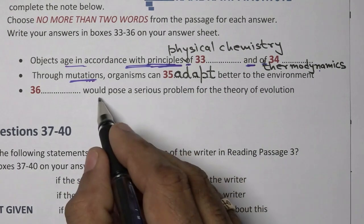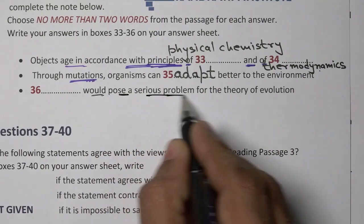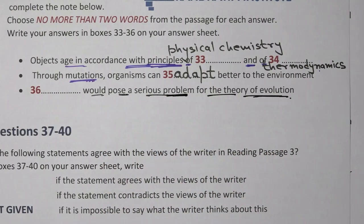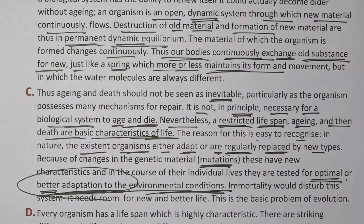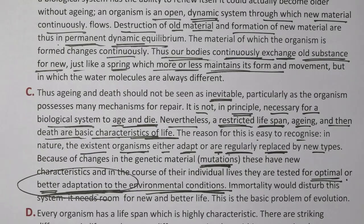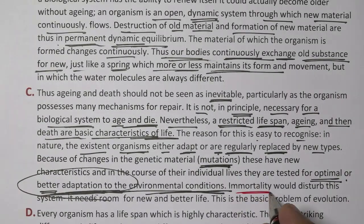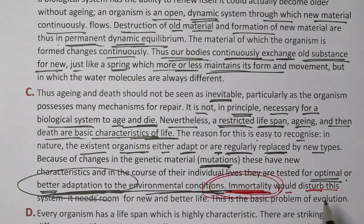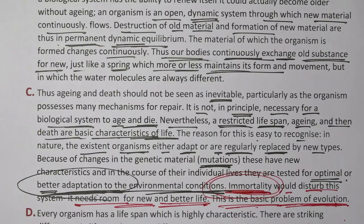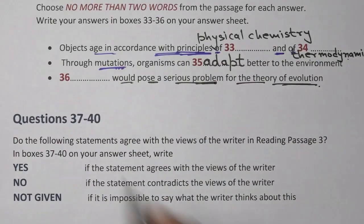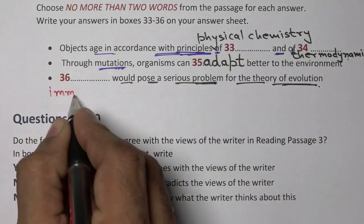Question 36: like the dash, this would pose a serious problem for the theory of evolution. Immortality would disturb this system — the theory of evolution. It needs room for new and better life. This is the basic problem of evolution. The answer is 'immortality' for question 36 — it would disturb the system by posing a serious problem.